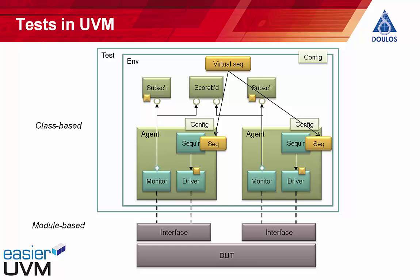Then comes the UVM test itself, which is normally just a fairly thin wrapper around the env. In the extreme case, the test could effectively be empty and contain nothing but the env, in which case the only distinction between two different tests is that they might be started with different random seeds to give slightly different test stimulus. Tests would be the place to write any directed testing code — although directed testing doesn't really fit with a constrained random testing methodology, you certainly can add directed tests.